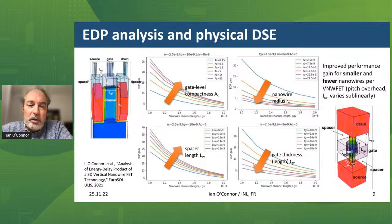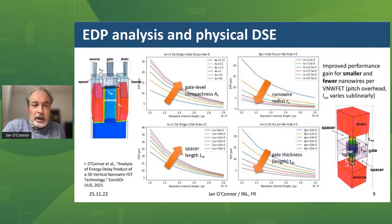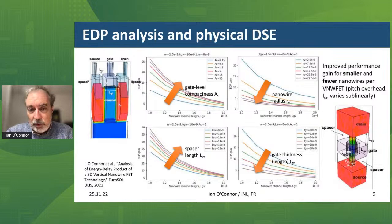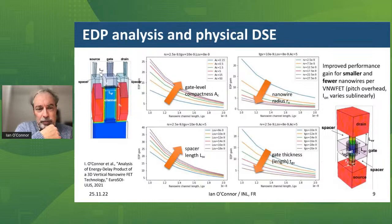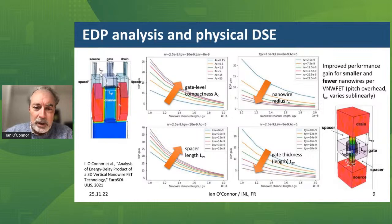We were also looking at empirical parameters like gate-level compactness, the nanowire radius, the spacer length between source/drain areas and the gate, and gate thickness for a given length. This enables us to conclude that you can get very strong performance improvements for smaller devices and for fewer nanowires per vertical nanowire FET. This bears out the idea that as you go to very small devices, things will get better and better with round and circular nanowire structures rather than very high FinFET devices.